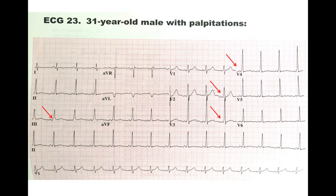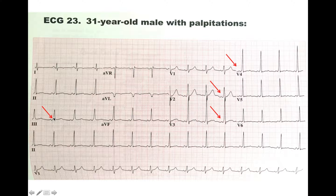Another thing you can see on this EKG — if you look at the arrows at V4, you'll appreciate this curve. Also in V2, another curve; V3, another curve; and in lead 3 you can also appreciate this curve. This curve is called the delta wave. The QRS complex here is about 0.10 seconds — we'll discuss that in the next slide.